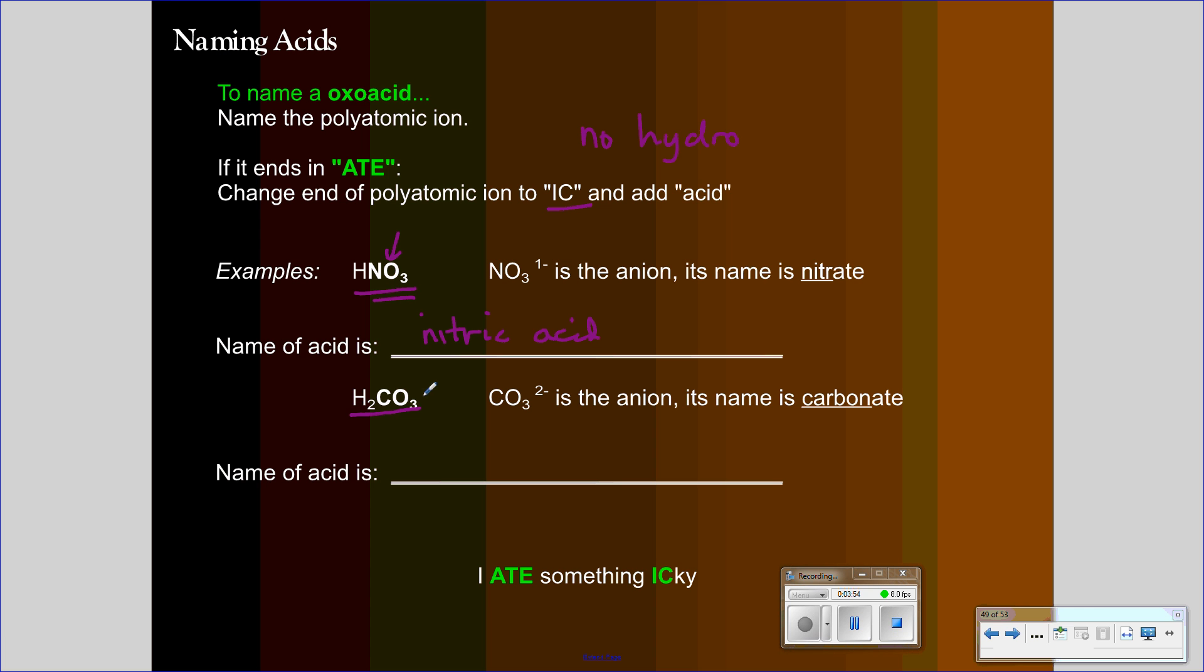So, this is a different oxoacid. It's carbonic acid. Carbonic acid is carbonate ion. Carbonate, carbonic acid. And I'm going to write carbonate here and show how that ending changes. Since this is an oxoacid, H2CO3, I know that this polyatomic anion is carbonate, and since it was ate ending, I changed that to ick, and then add the word acid. Cute mnemonic for this is, I ate something icky.